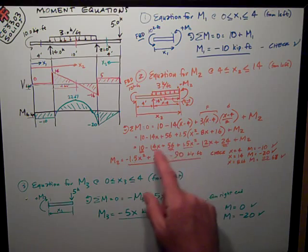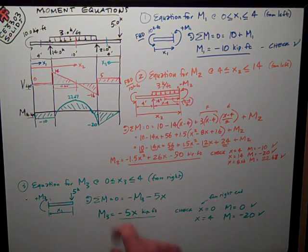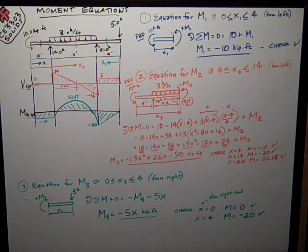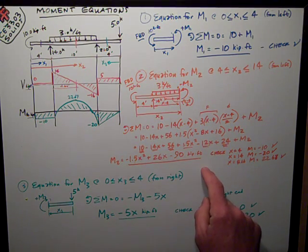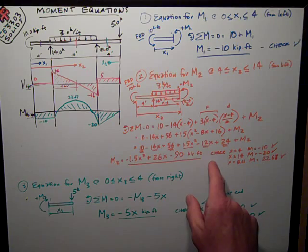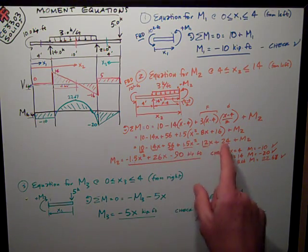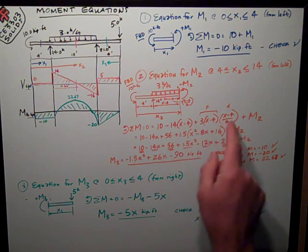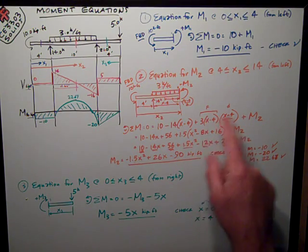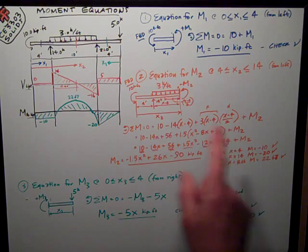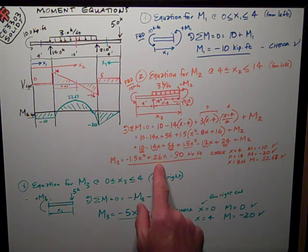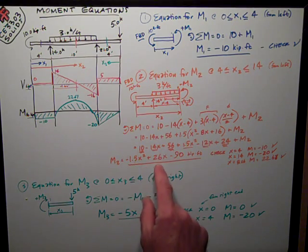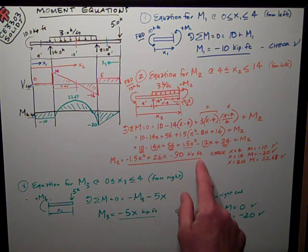Then I continue to expand it out. On a test, I recommend that you write all this out so you have something to go back to and check in case you mess up, because I am going to be able to check my answers here. Combining all the terms, this is the way I want it. I don't want it written like this, or x minus 4 squared, or anything like that. I want you to do the math and simplify the equation to this point, as simple as you can get, which is negative 1.5x squared plus 26x minus 90 kip feet.